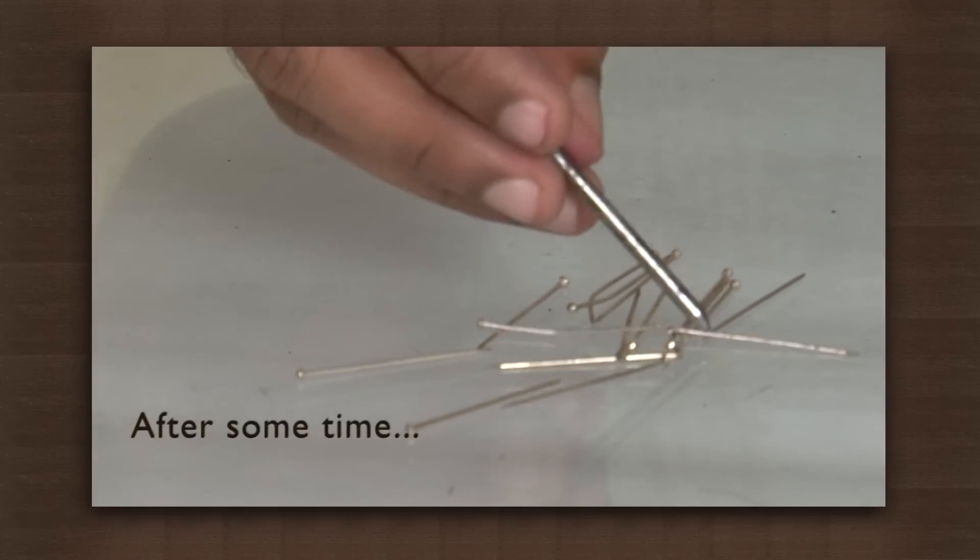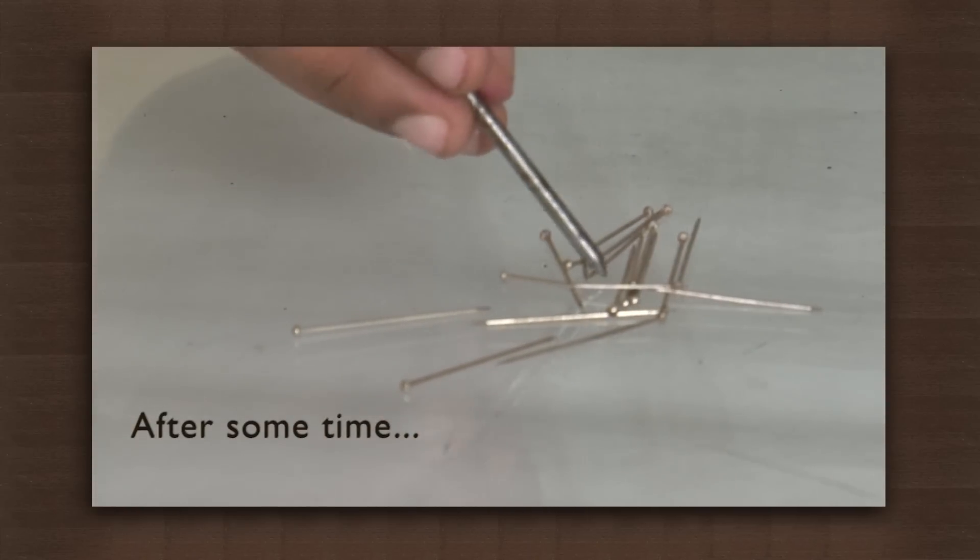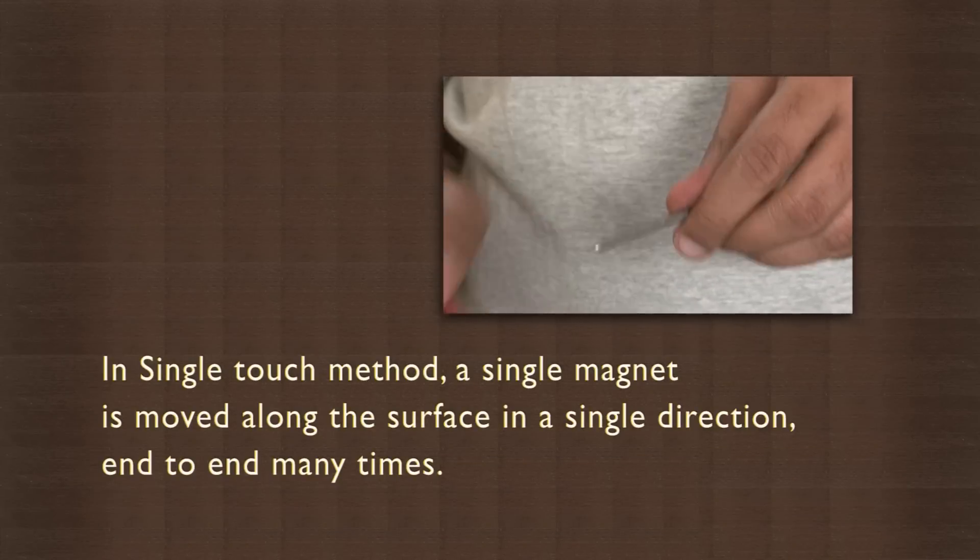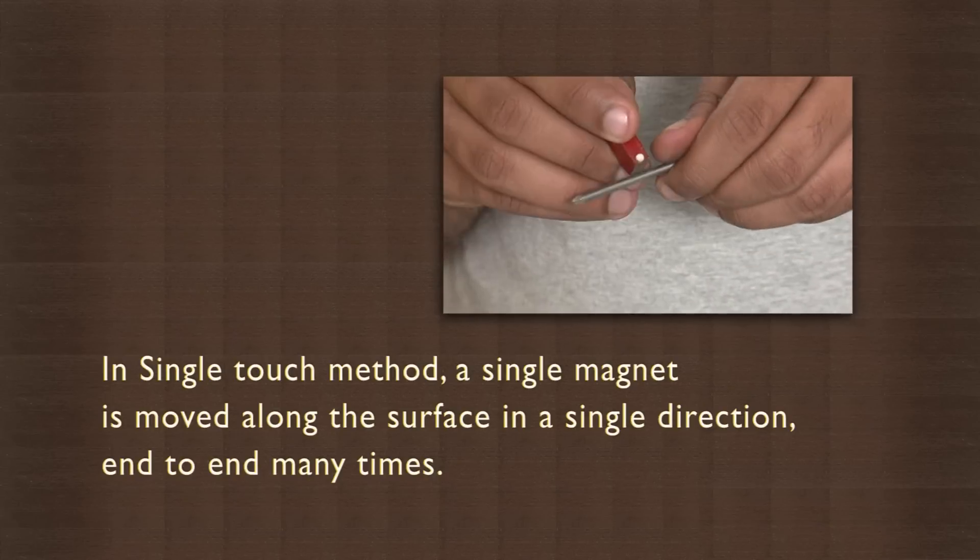Since the nail will lose its magnetic property after some time, it is considered as temporary magnetization. In the single touch method, a single magnet is moved along the surface of the nail in a single direction end to end many times.